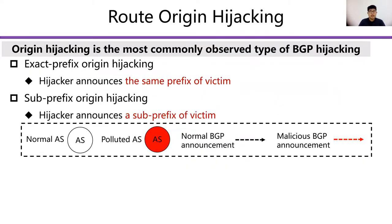Origin Hijacking is the most common type of BGP hijacking, and is usually caused by misconfiguration or malicious attacks. There are two types of Origin Hijacking: exact prefix Origin Hijacking and sub-prefix Origin Hijacking.